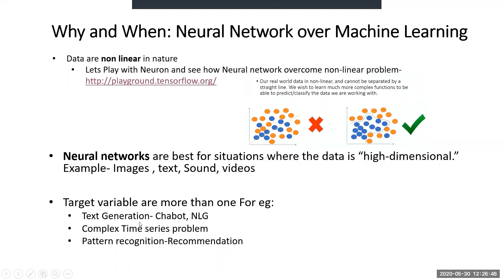One application is text generation, another is time series problems like share trading or sequential text. For example, generating 'how are you' is a time series problem: at time t0 it is 'how,' at time t1 it is 'are,' and at time t2 it is 'you.' If you change the context — like putting 'are' before 'how' — it would be a grammatical mistake. So text generation is also considered a time series problem.